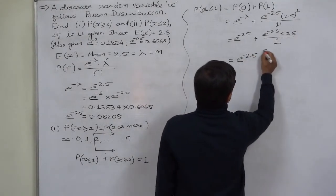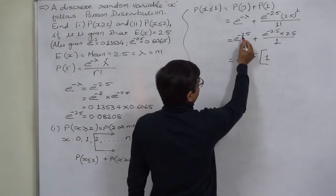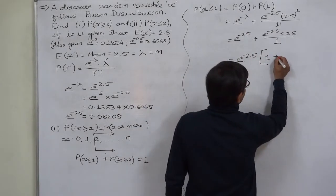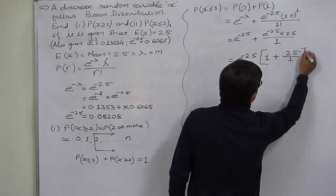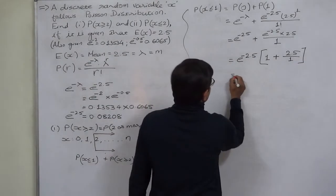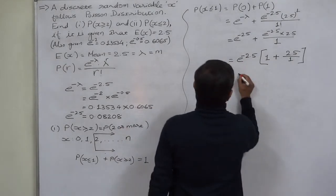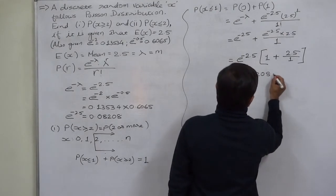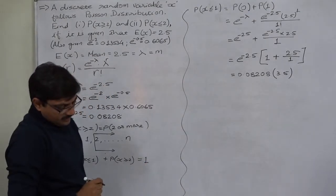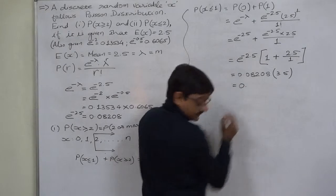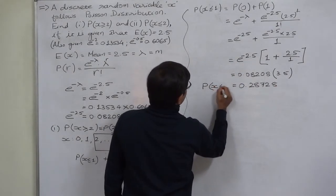Taking e^(−2.5) as a common factor, we get e^(−2.5) × (1 + 2.5). Substituting, e^(−2.5) = 0.08208 and the bracket value is 3.5. Multiplying these two gives us 0.28728. This is the value of P(X ≤ 1).